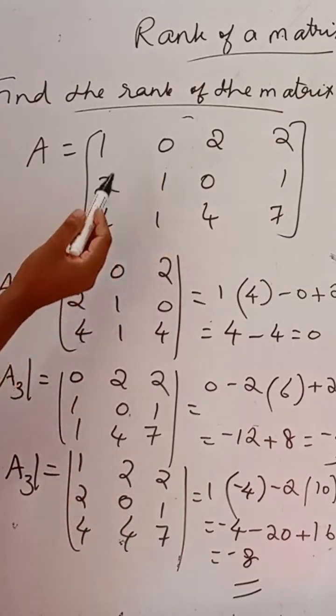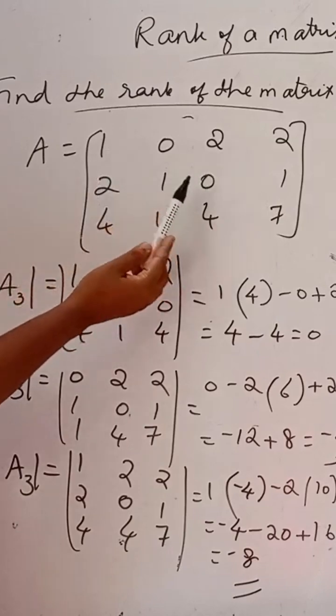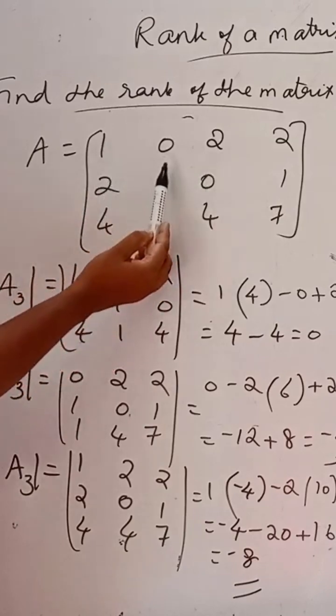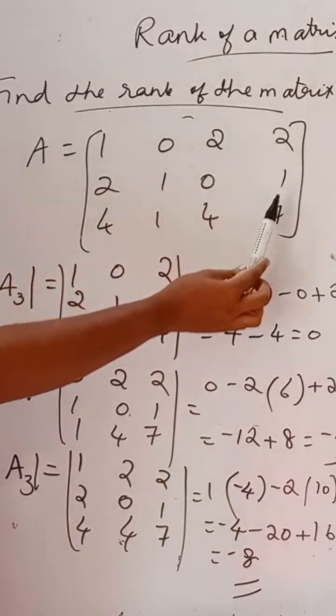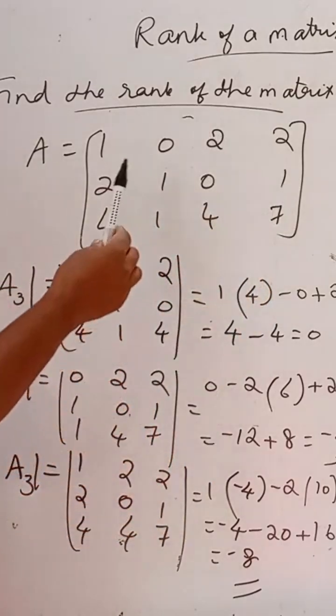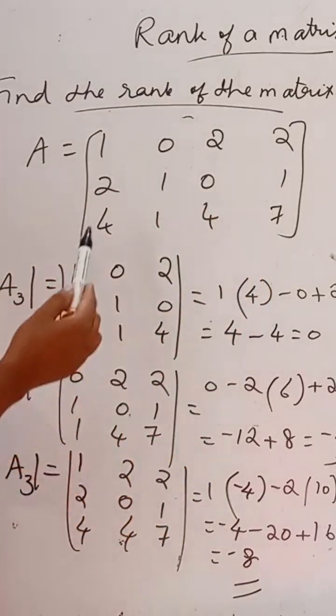we can find determinant for another submatrix. That is 1, 2, 4, 0, 1, 2. Then skip this one and 2, 1, 7. So in that case we can also find the determinant.